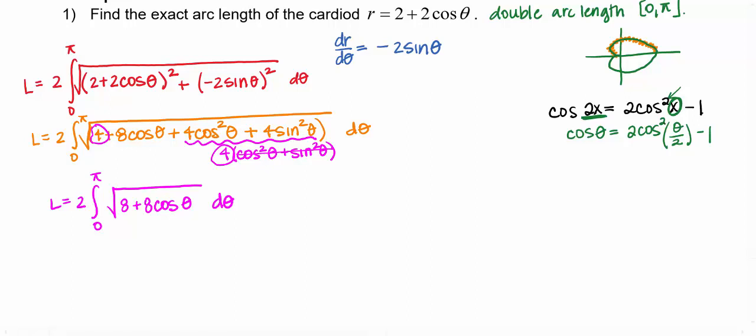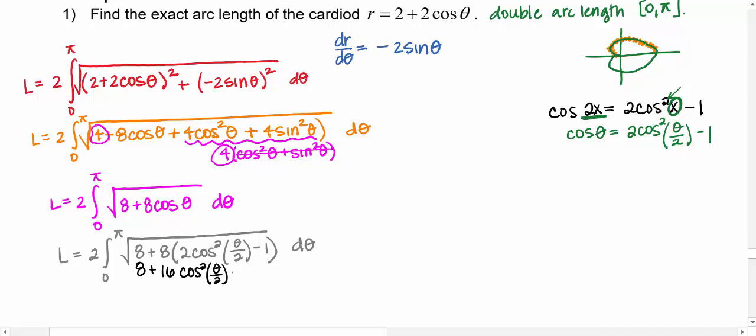So that's what we're going to put over here in our arc length. And I'll show you why that's going to be very friendly, I believe. So we're doubling zero to pi still, square root of 8 plus 8 times cosine of theta, which I think is 2 cosine squared theta over 2 minus 1. And we're integrating with respect to theta. And so just under this square root right here, this is 8 plus 16 cosine squared theta over 2 minus 8. And so hopefully I can see 8 minus 8 adds to 0.